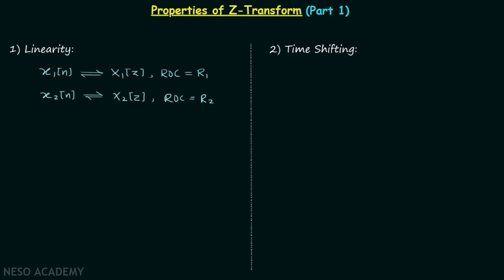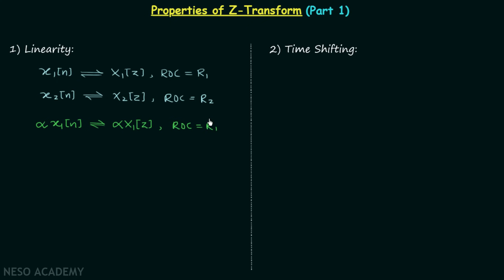Now we will perform the scaling of signal x1[n] by alpha, giving us alpha·x1[n] as our new discrete time signal. Since we have a new signal, the corresponding Z-transform will also change, and the new Z-transform will be alpha·X1(z), while the region of convergence remains the same, equal to R1.